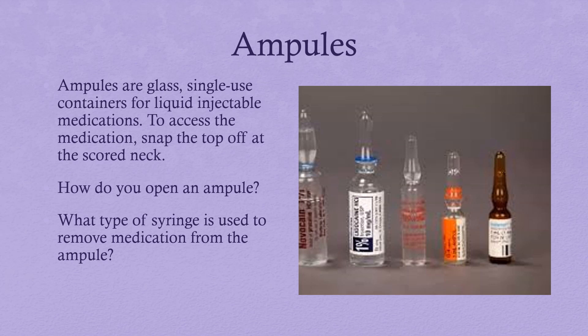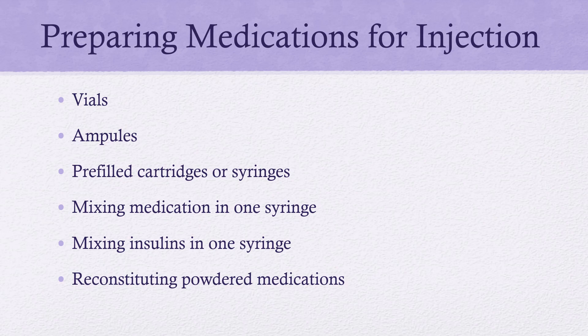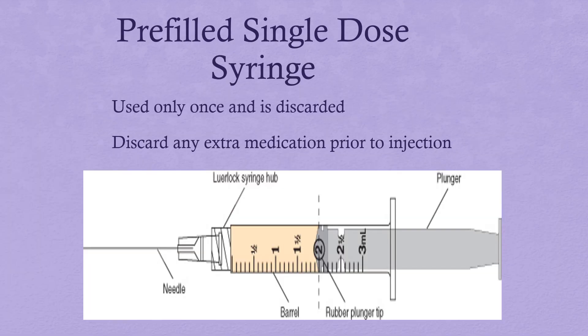Ampoules are single-dose glass containers — we pop off the top and use a filter needle with these. Pre-filled single-dose syringes are one-time use and are discarded after. They come up from the pharmacy — vaccines, for example, come pre-filled. If you don't need all of the medication, discard any extra before giving it to your patient.